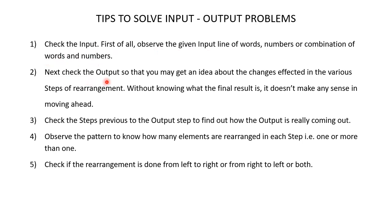Next, check the output so that you may get an idea about the changes affected in the various steps of rearrangement. Without knowing what the final result is, it doesn't make any sense in moving ahead. Next, check the steps previous to the output step to find out how the output is really coming out. Observe the pattern to know how many elements are rearranged in each step — that is, one or more than one. Check if the rearrangement is done from the left end or the right end or from both the right and left end.